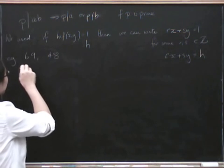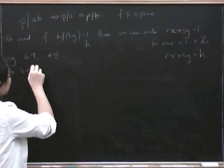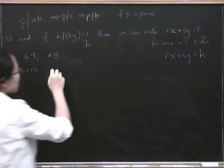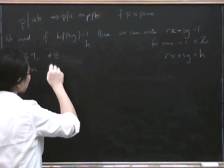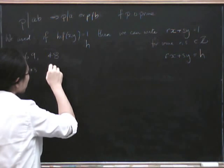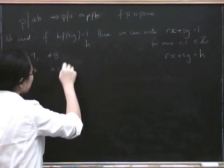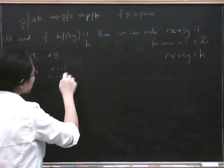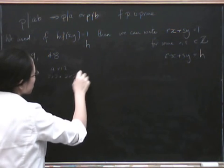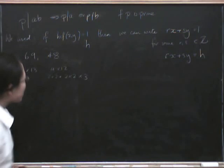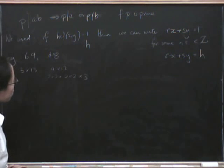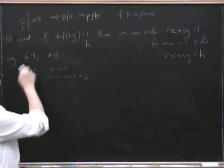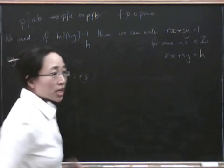Let's see what the highest common factor is. Well, 69 is 3 times 23. And 48 is 4 times 12, which is 2 times 2 times 2 times 2 times 3 — that's 16 times 3. So the highest common factor must be 3.